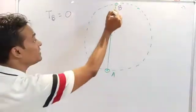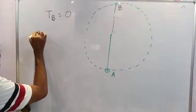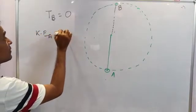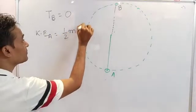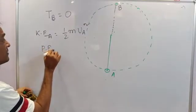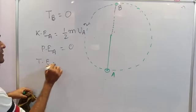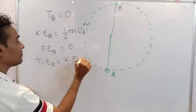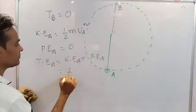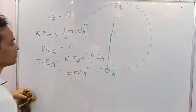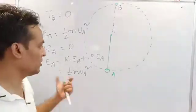What is the energy at the lowest point? Kinetic energy is half mv squared. I have already derived this. Total energy is the kinetic energy plus potential energy. This is the total energy.